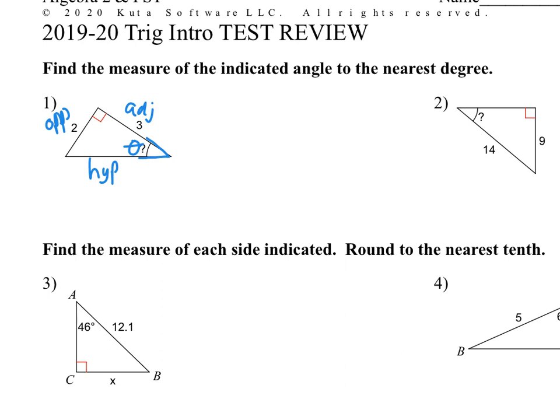So we need to ask ourselves in this problem which sides are we given. Sometimes they'll give you all 3, but on this one we only know 2 — we know the opposite and we know the adjacent. Going back to SOHCAHTOA: sine is opposite over hypotenuse, cosine is adjacent over hypotenuse, and tangent is opposite over adjacent. So if we're dealing with opposite and adjacent, it's going to be tangent.